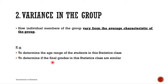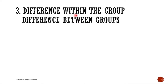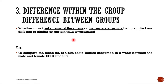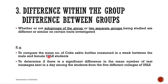Third is difference within the group and difference between groups. This asks whether subgroups or two separate groups being studied are different or similar on certain traits. Examples include: to compare the mean number of softdrink bottles consumed per week between male and female USLS students, or to determine if there is any significant difference in the mean number of text messages sent in a day among students from five different colleges of USLS.